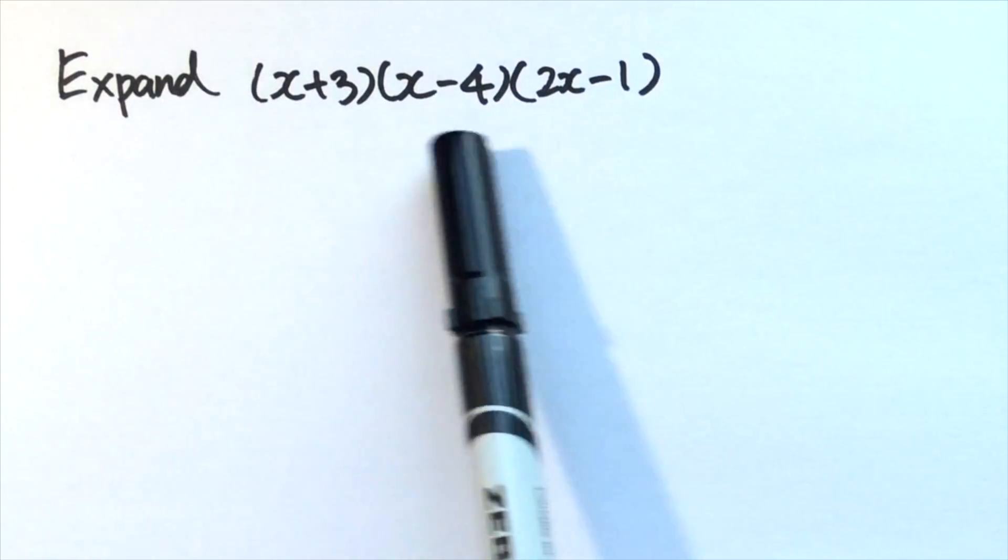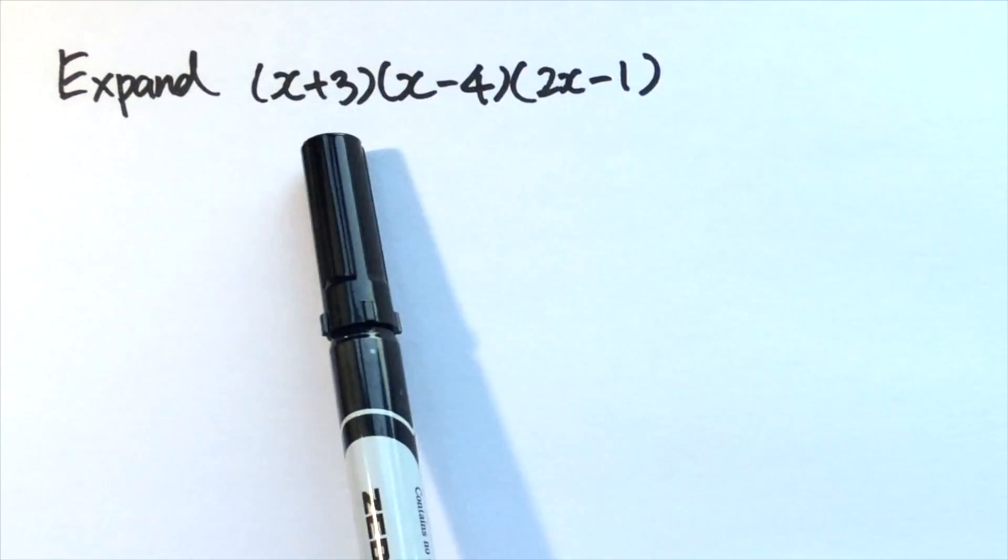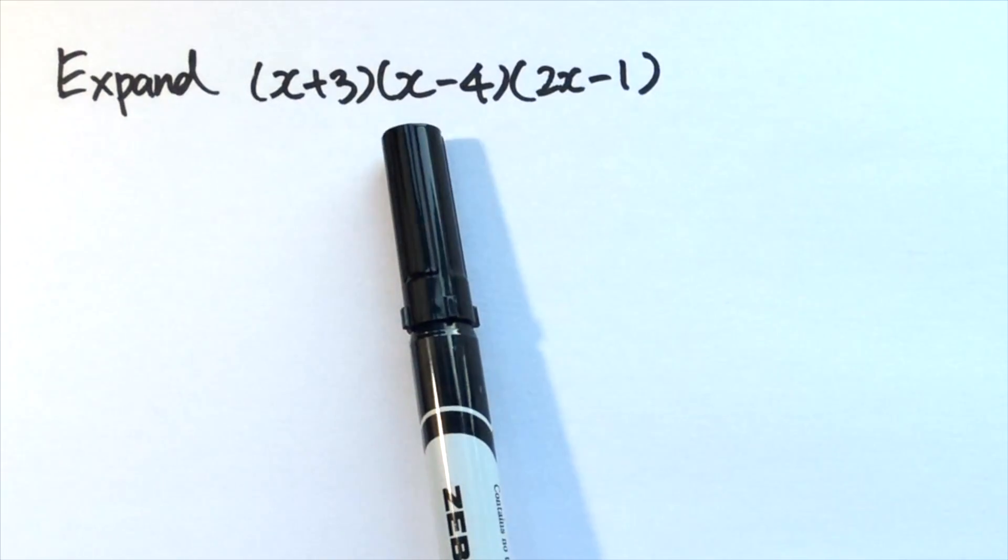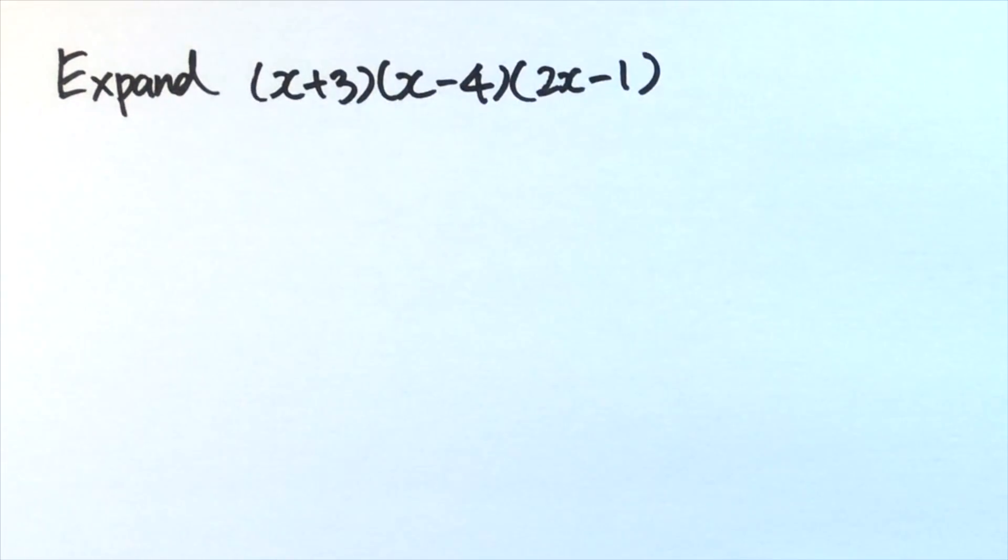Example: expand this product of binomials: x plus 3, times x minus 4, times 2x minus 1.